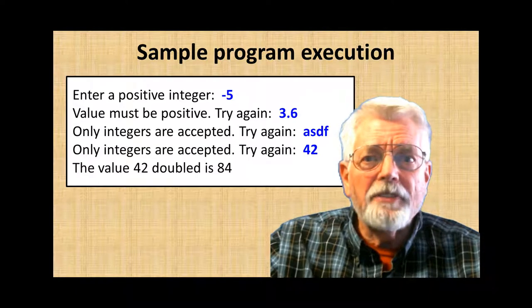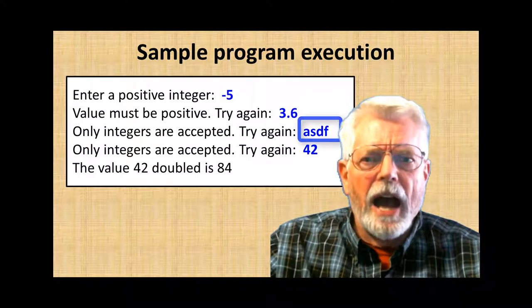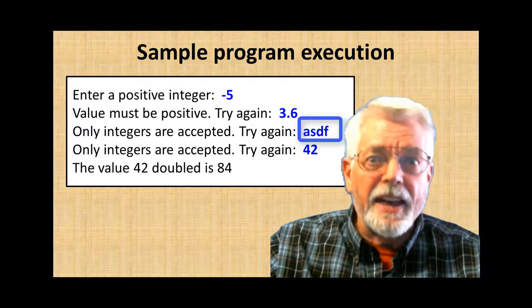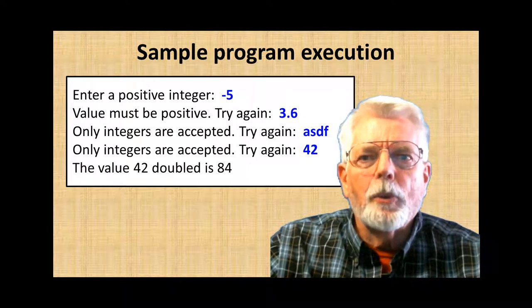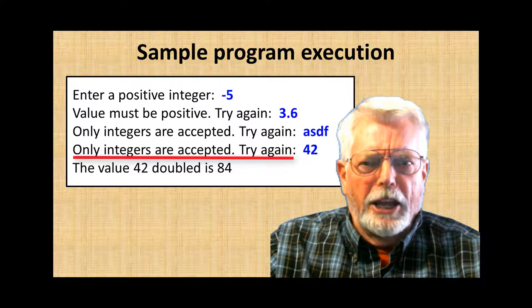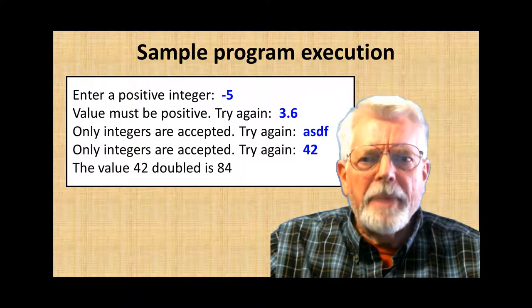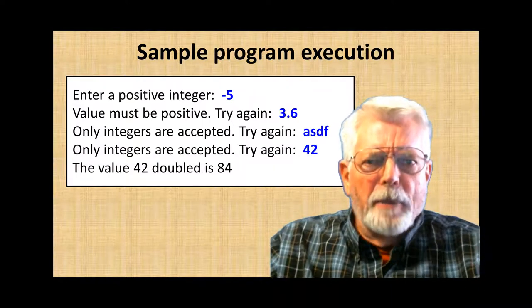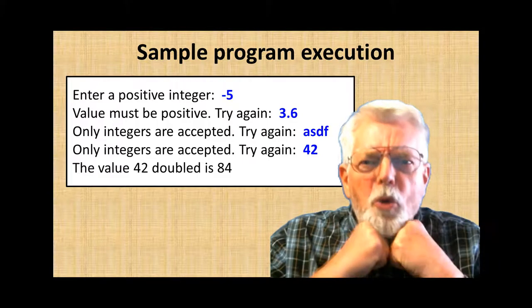Then I try entering a 3.6 and the program responds with only integers are accepted, try again. This time I'll see if I can really fake it out. I am entering the letters ASDF. The program responds again with only integers are accepted, try again. I am being rejected by this program. It must not like me. How rude!